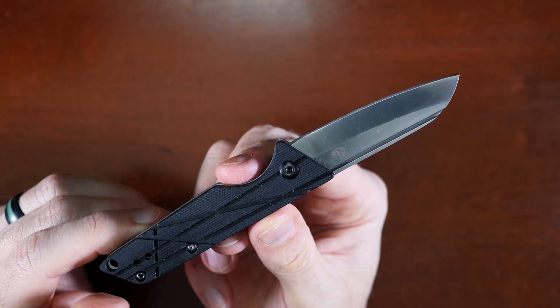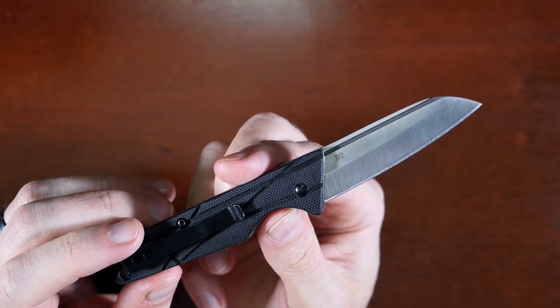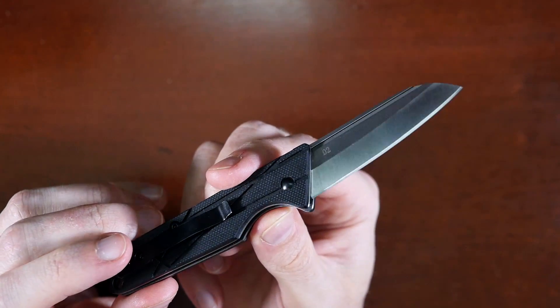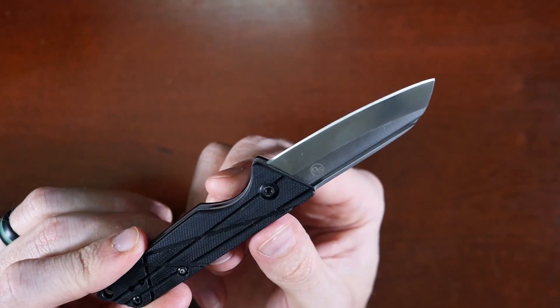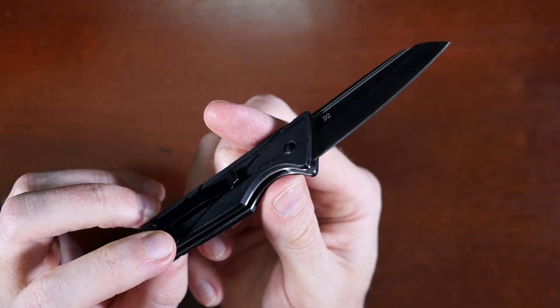The blade is made of D2 steel, which is well known for its high quality, and tempered to hardness of 59 to 61 on the Rockwell C scale. So, nice and hard. Should be a very durable edge.